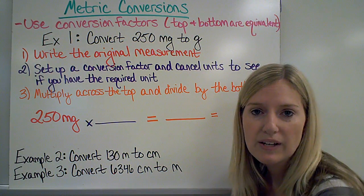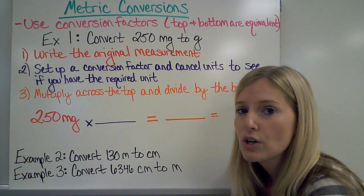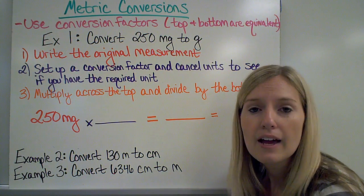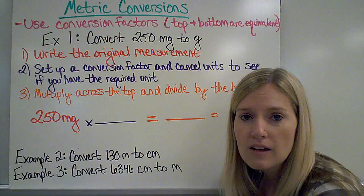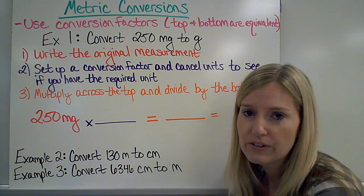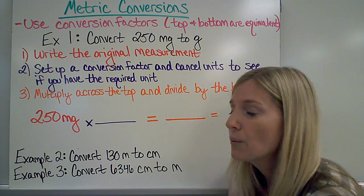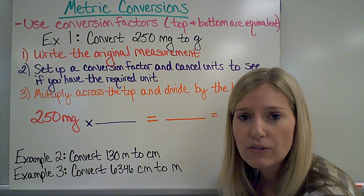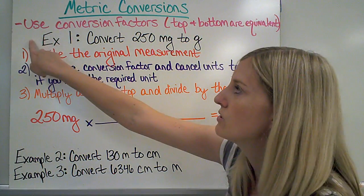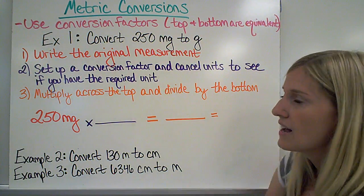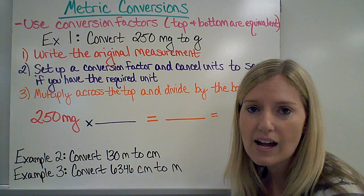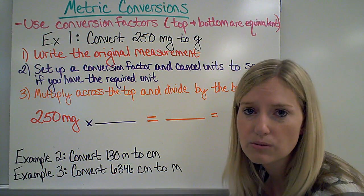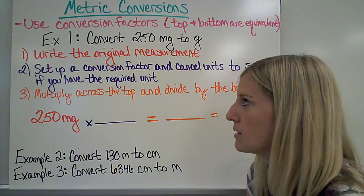There will be times when I need to convert from grams to kilograms, or from hectometers to meters. The way you've done it before is different from the way we're going to do it in physical science. We are not going to just move the decimal point. We're going to use a different method — it requires us to use conversion factors. A conversion factor is a fraction where the top and the bottom are equivalent, or equal to each other.